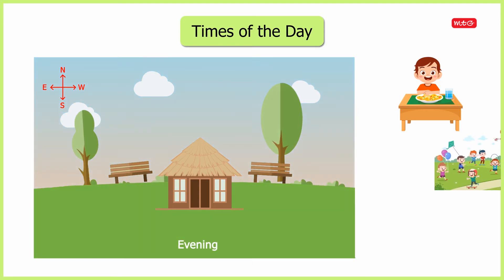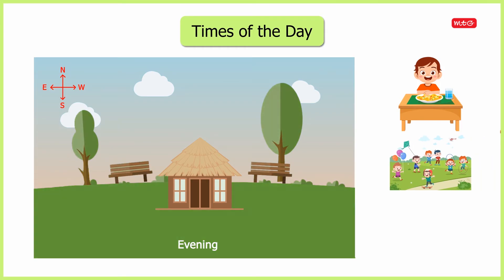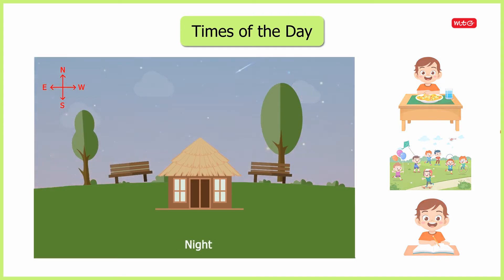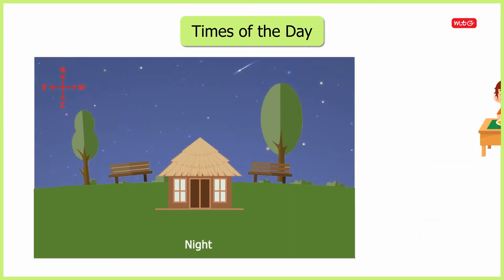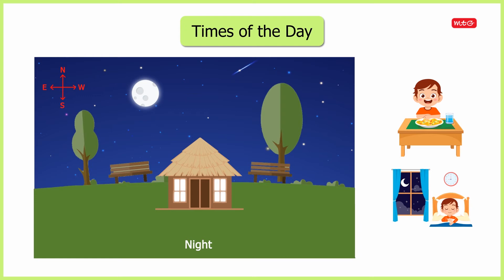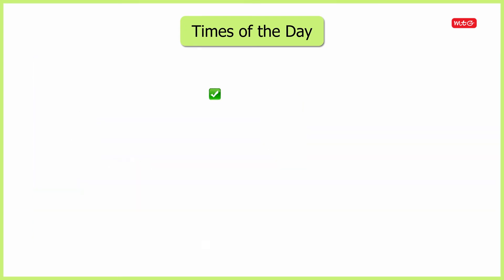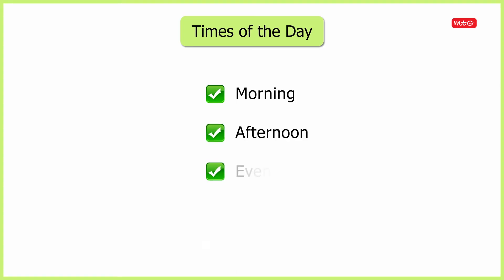When the sun sets in the evening, you go out to play, come back home, and do your studies. After the sun sets, at night, you have your dinner and sleep. So the different times of the day are morning, afternoon, evening, and night.